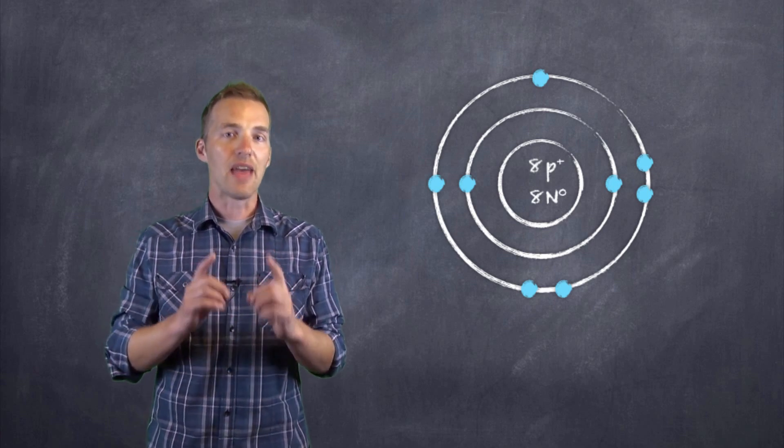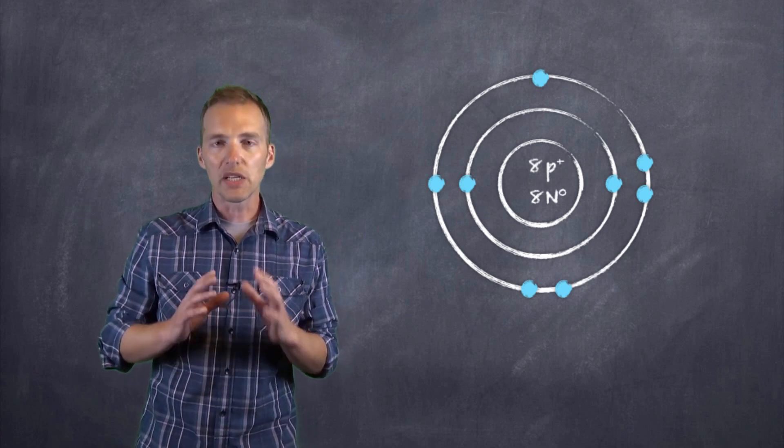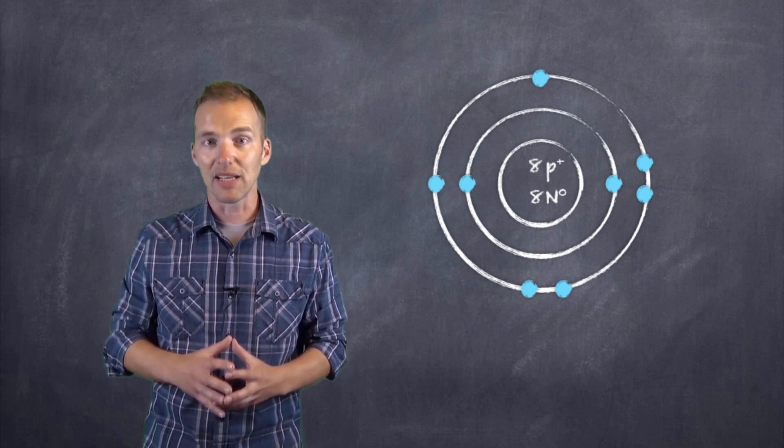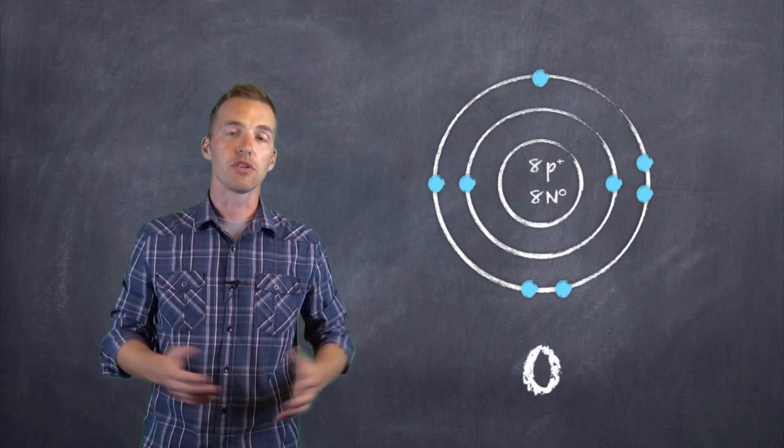And in fact, for the Lewis structure, that's what the focus is on, those valence electrons. So as we construct the Lewis structure, the first thing that we do is take the symbol representing that element or atom, and we just write it down. So in the case of oxygen, it's just O.